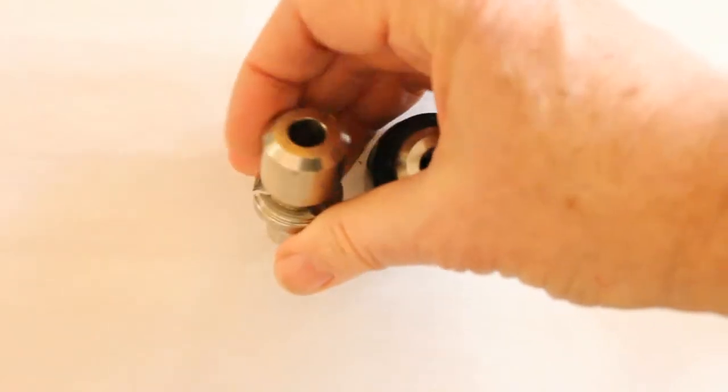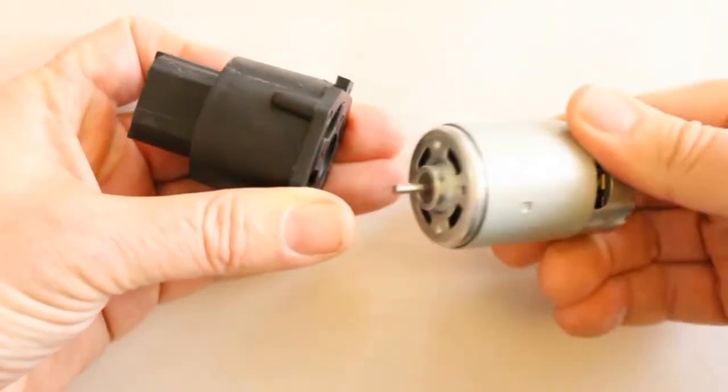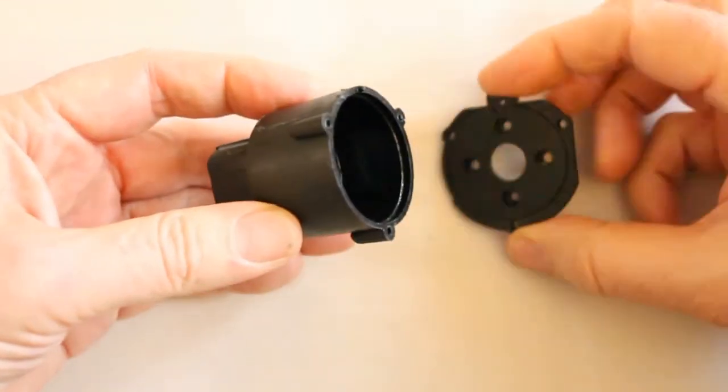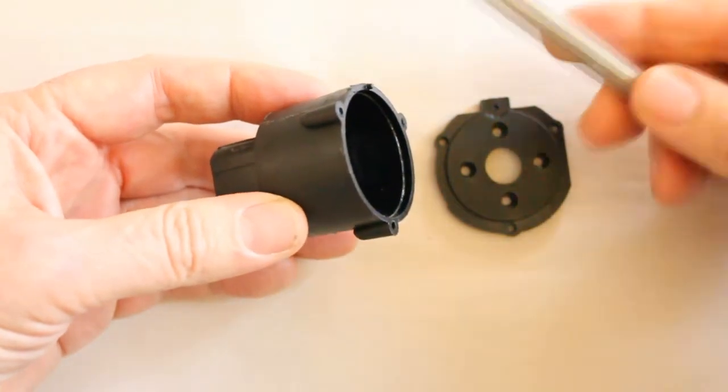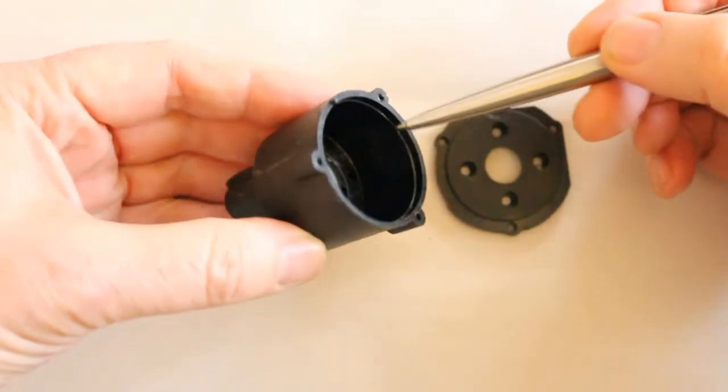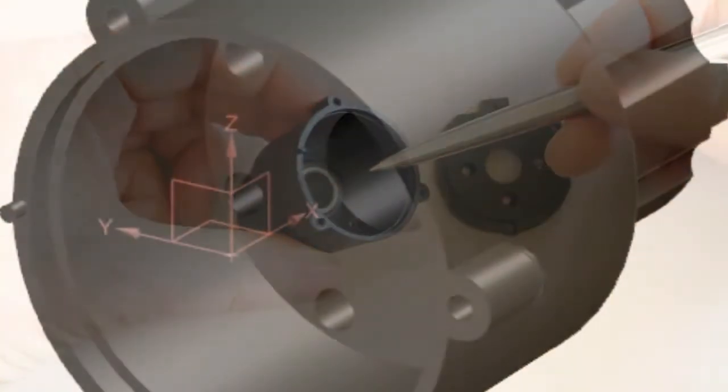Revolve parts typically also have a mounting surface. For example, this gearbox is primarily a revolve part that mounts to this mounting plate. It makes sense to design the part with the datum axis at the center of the intersection of this mounting plane and the center axis of the revolve.